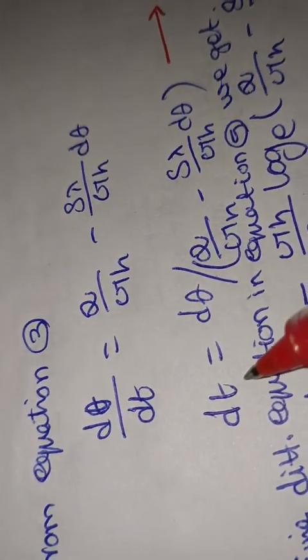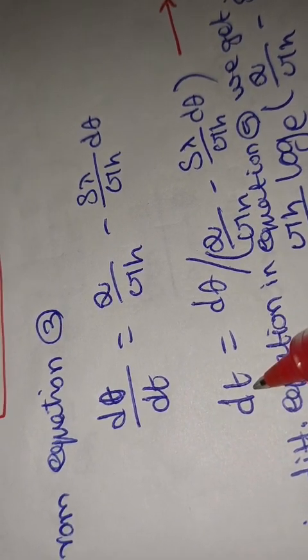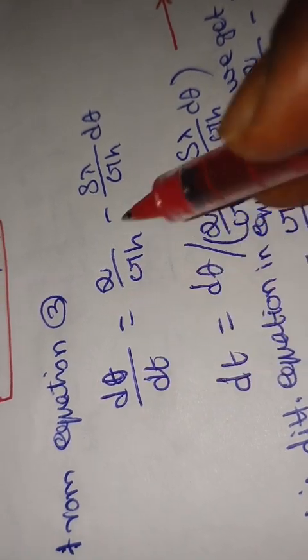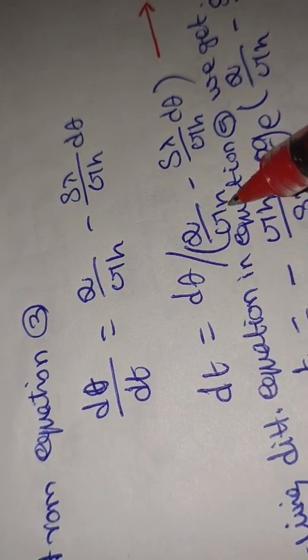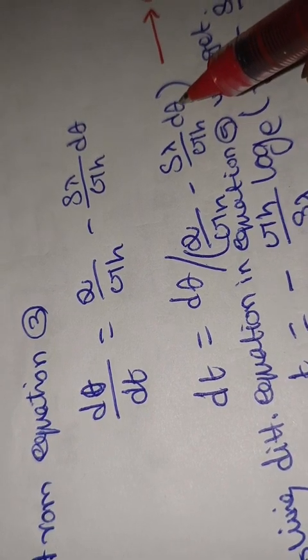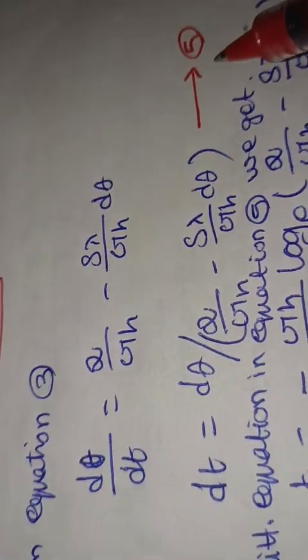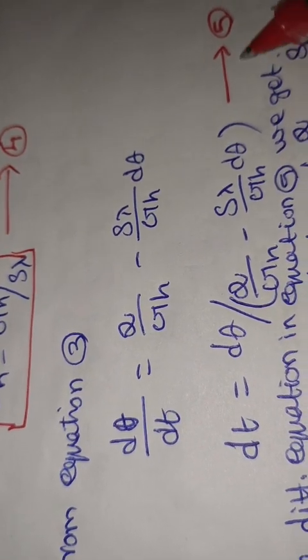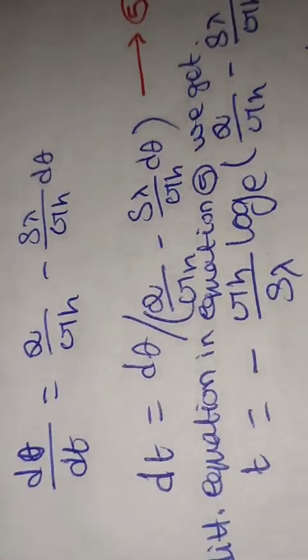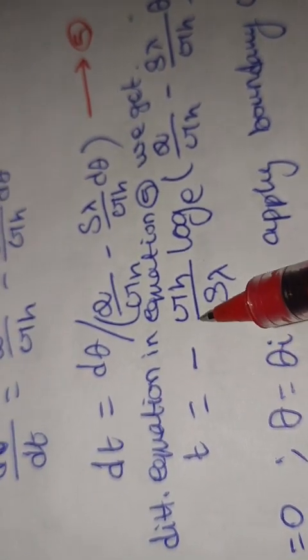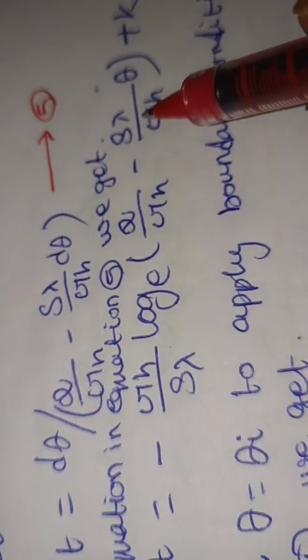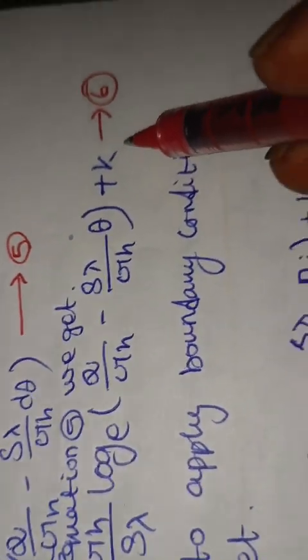We need to find the actual temperature rise, so we rearrange to get: dt = dθ / [Q/(G·H) − (S·λ)/(G·H)·θ]. That is equation five. Solving this differential equation, we obtain: t = −(G·H)/(S·λ) · ln[Q/(G·H) − (S·λ)/(G·H)·θ] + k, where k is a constant. That is equation six.